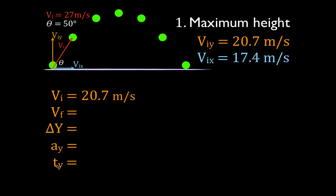We know the initial velocity in the y direction is 20.7. We want to figure out the height — how high the object goes. When it reaches its maximum height, the final velocity is 0 meters per second. In two-dimensional projectile motion, the object is essentially experiencing freefall, and therefore the acceleration in the y direction is minus 9.81 meters per second squared.